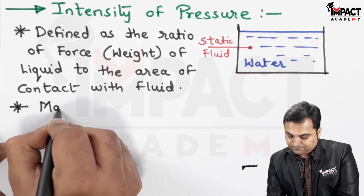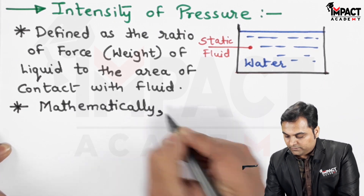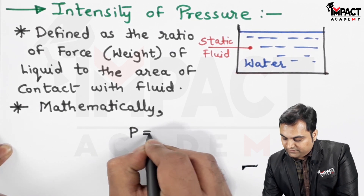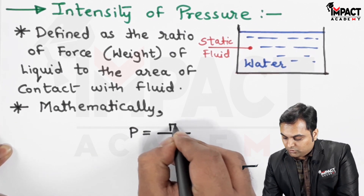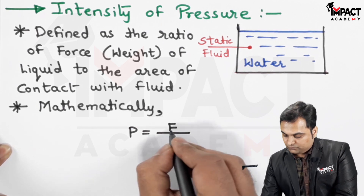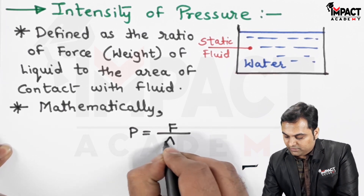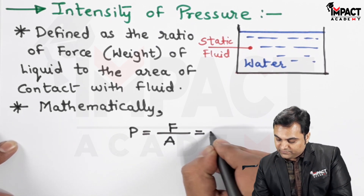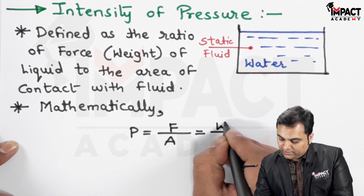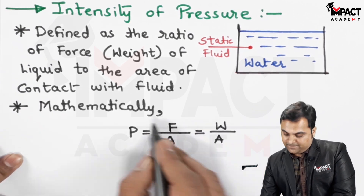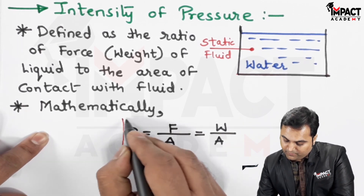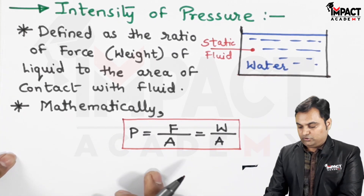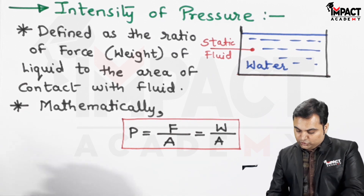It is given by the formula: intensity of pressure, denoted by P, is equal to force upon area — F upon A — or it can also be written as W upon A, that is weight upon area. So the amount of force exerted on a particular area is called the intensity of pressure.